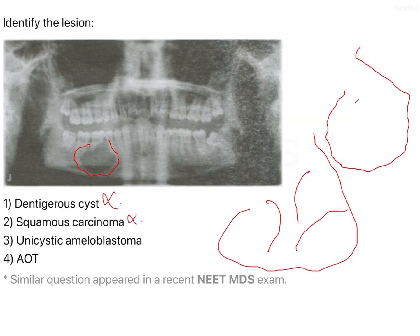Now, coming to the option between unicystic ameloblastoma and AOT. Unicystic ameloblastoma is a single cystic lesion — one of the types of ameloblastoma. It will not have multiple cystic formations or multiple follicles; it will be a single follicle. It is most of the times a unilocular lesion, though very rare reports of multilocularity exist. One more important thing: unicystic ameloblastoma occurs more commonly in the mandibular molar posterior region, involving the ramus, angle, and body. This image directs more towards a unicystic ameloblastoma than an AOT.